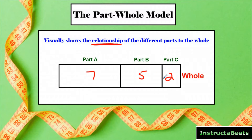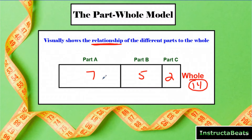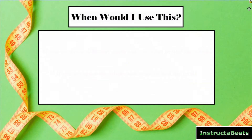You can see the relationship between the parts and how they compare to the whole. Our whole for this example is 14 — seven should be exactly half of 14. Then we have five and two as the other parts. So we have the groups, we can label what those parts are and their values, and then we have the whole. Those are the pieces of our part-whole model.